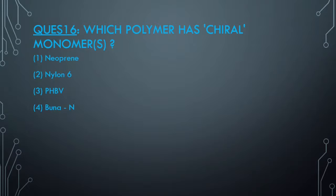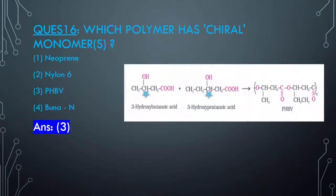Question 17: Which polymer has a chiral monomer? The answer is PHBV. If you know the structure and remember it, you can answer in seconds - there are two chiral atoms in the monomers. These carbons are sp3 hybridized and have four different groups present, so they are chiral atoms.